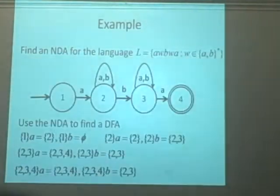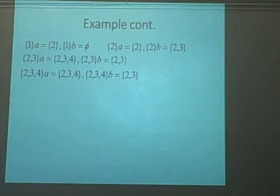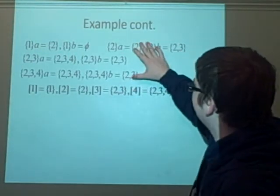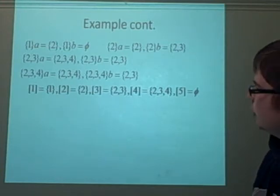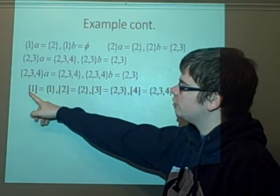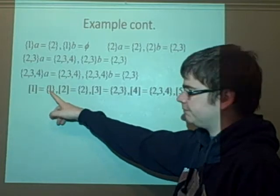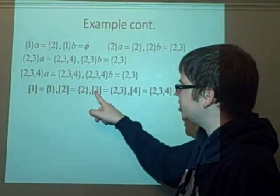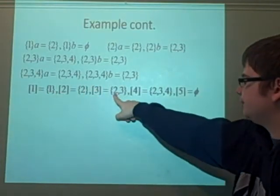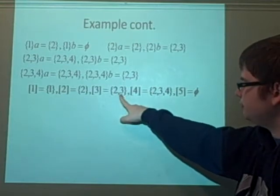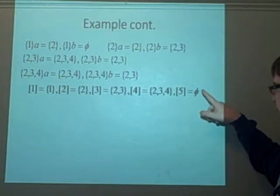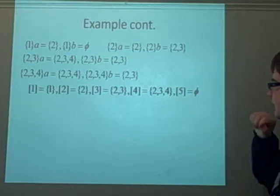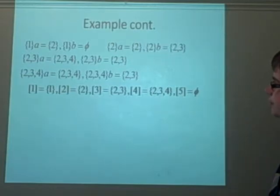Now we just want to draw our DFA. So I've put all the facts we've got from up here, because that's very useful for finding it. Now, if we re-label all our states, I'm going to let the re-label 1 as just the 1, 2 as just the 2, 3 we're going to label as the 2, 3, 4 we're going to label as the 2, 3, 4, and 5 we're going to label as the empty set. Because that was there, wasn't it?